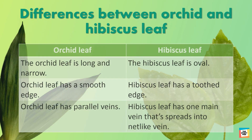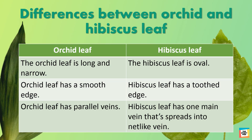The orchid leaf is long and narrow while the hibiscus leaf is oval. Orchid leaf has a smooth edge while hibiscus leaf has a toothed edge. Orchid leaf has parallel veins and hibiscus leaf has one main vein that spreads into a net-like vein.